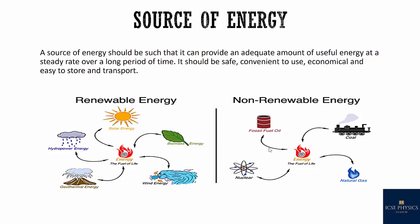Sources of energy can be divided into two types. First is conventional and non-conventional. Sources which have been used since a long time, like coal, wind, and wood, are conventional sources. Non-conventional sources have been started only recently, like sun and wave energy.